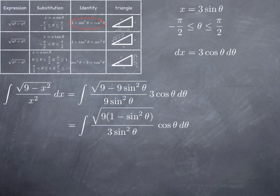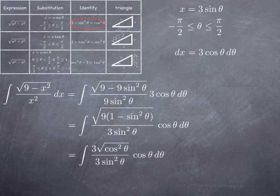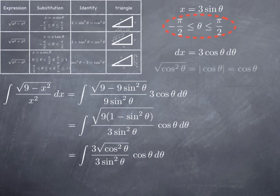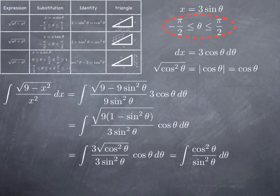We use the identity 1 minus sine squared equals cosine squared. Factoring 9 inside the square root gives root of 9 times (1 minus sine squared). The 3 from 3 cosine theta and the 9 in the denominator reduce to a factor of 3 at the bottom. Replacing 1 minus sine squared by cosine squared and pulling 9 out of the square root gives a factor of 3, and since cosine is positive on the interval, root of cosine squared theta is just cosine theta. So we end up with 3 cosine theta times cosine theta over 3 sine squared theta, and the 3 cancels, leaving the integral of cosine squared theta divided by sine squared theta.